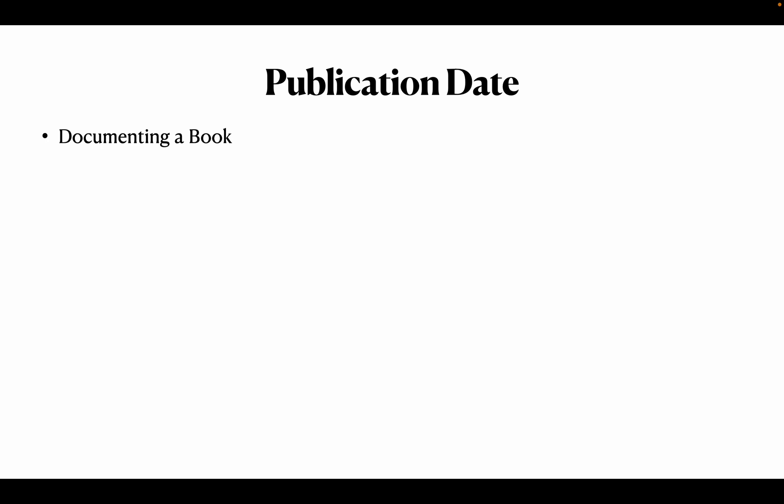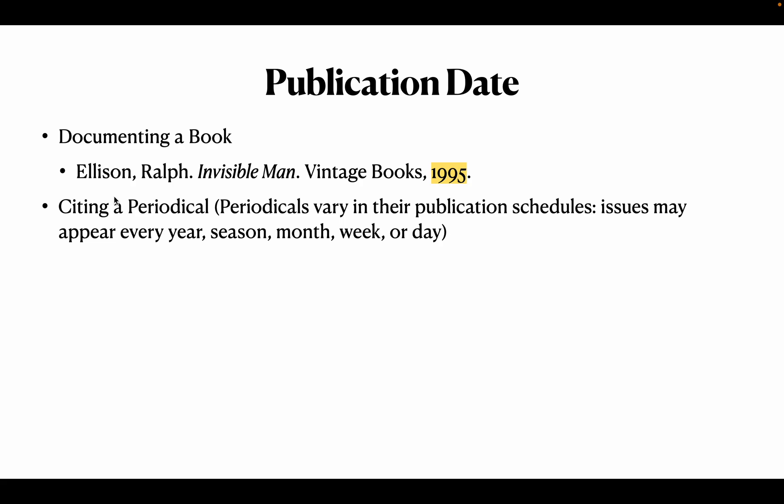Next is publication date. When documenting a book, it is straightforward: author, book name, publisher, then publication date — year only. When citing a periodical, it is tricky because periodicals have different ways of citing the volume, issue, and number.